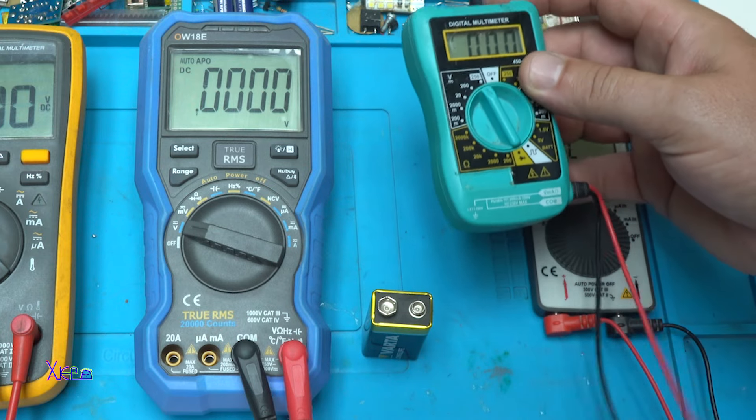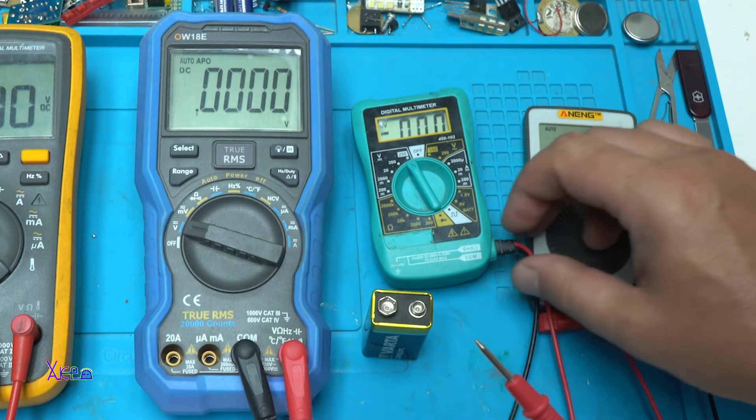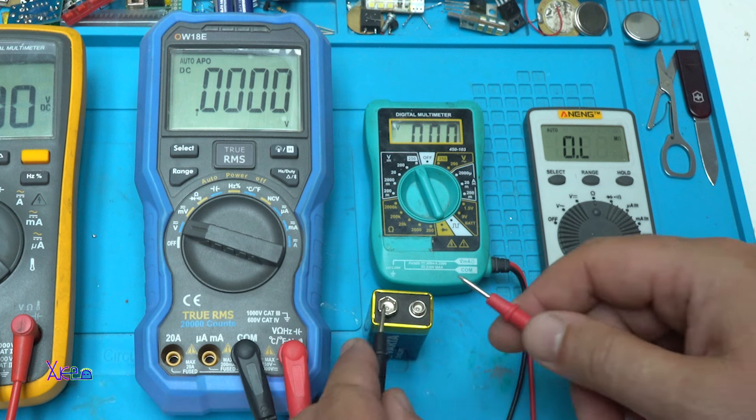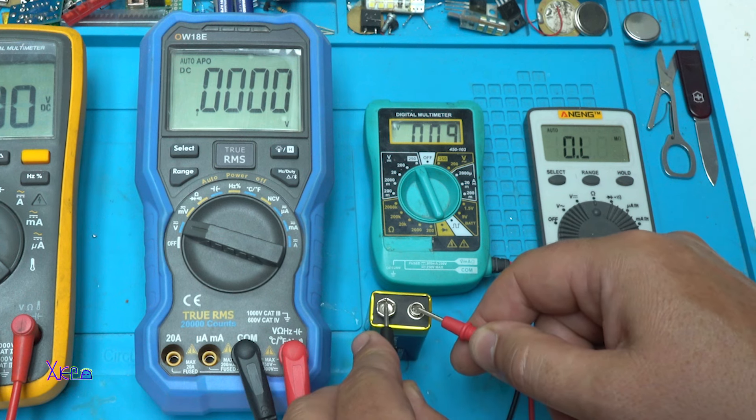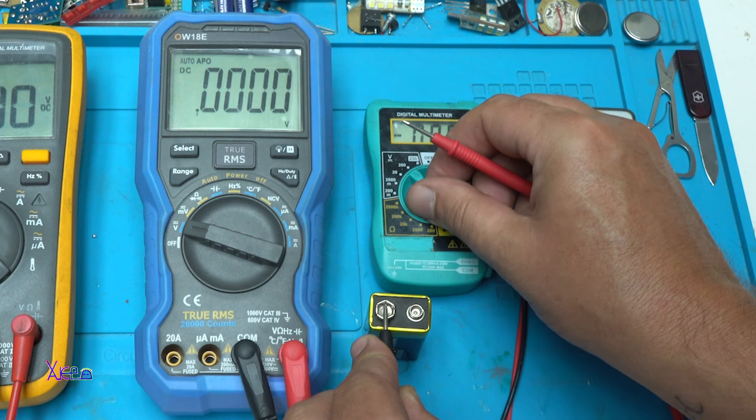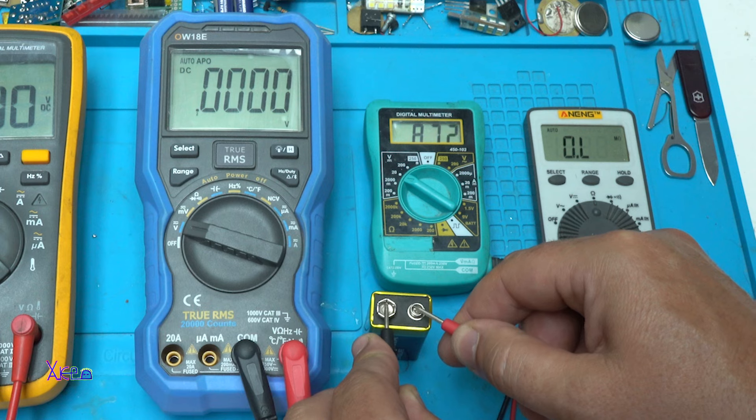And the smaller or the mini DMM can measure voltage, resistance, check diodes, continuity and so on. This is on 250V maximum. You can choose 200V maximum or 20V maximum. 8.7 volts. That is great.